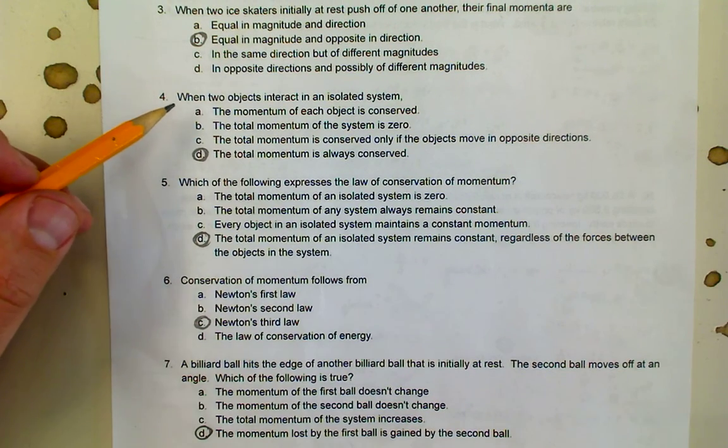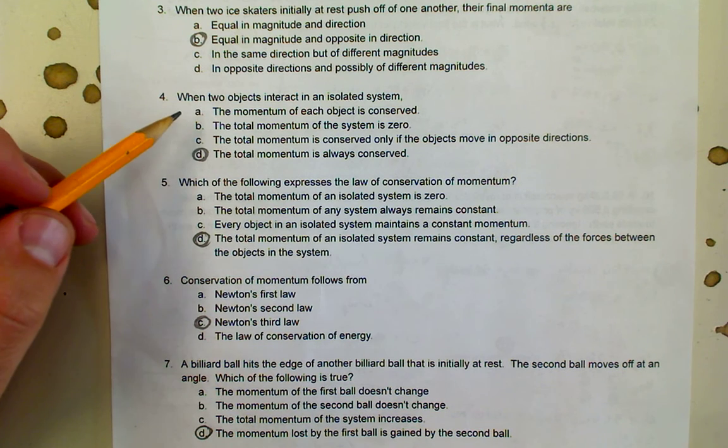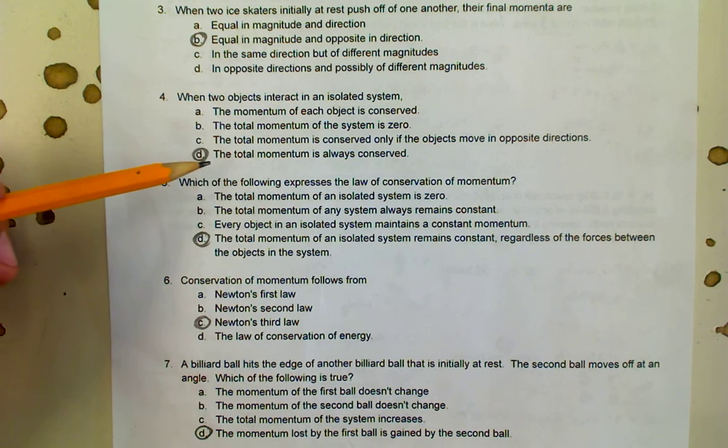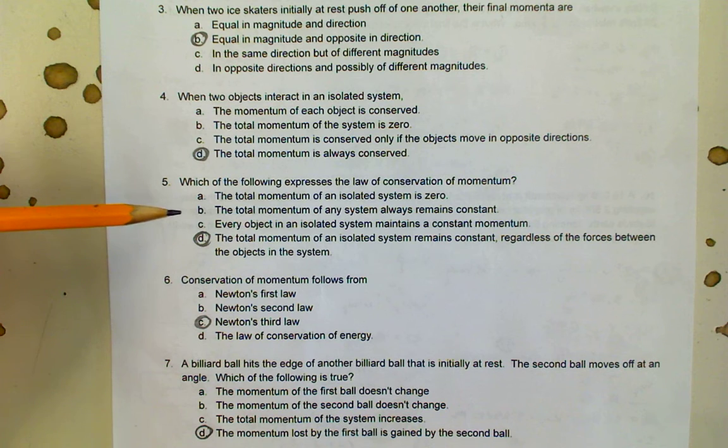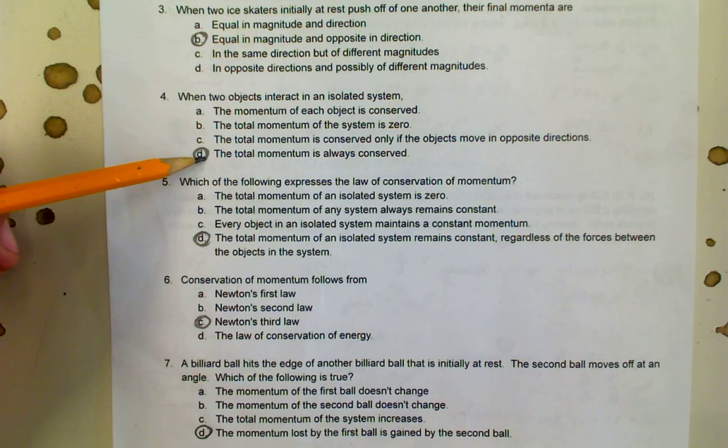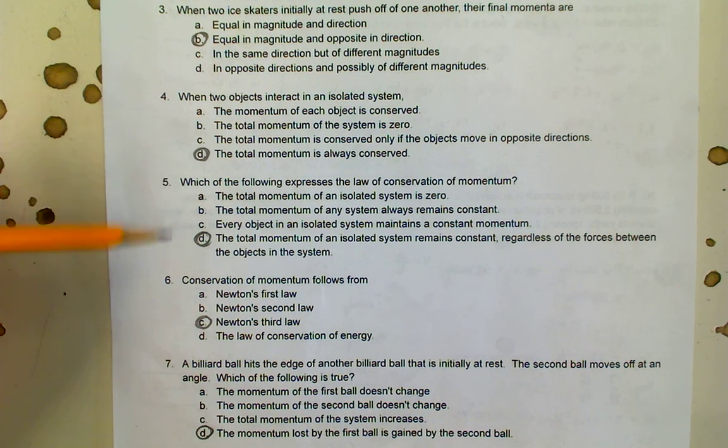Now we're getting into the basic definition of conservation of momentum. When two objects interact in an isolated system, the total momentum is always conserved. It could be that the objects are moving so their momentum is not zero. It also could be that momentum is transferred from one object to another. But the total momentum is always conserved period. That is the law of conservation of momentum.